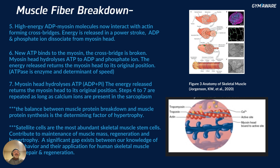The high-energy ADP-myosin molecules interact with actin, forming cross-bridges, and energy is released in a power stroke, leaving ADP and inorganic phosphate to dissociate from the myosin head. New ATP then binds to myosin, the cross-bridge is broken, and the myosin head hydrolyzes ATP to ADP and phosphate. The energy released returns the myosin head to its original position. ATPase is the enzyme that determines the speed of a muscle fiber — it's what researchers like Dr. Galpin examine when classifying fibers as fast or slow.